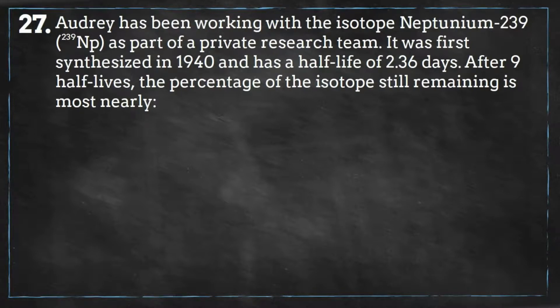Audrey has been working with the isotope Neptunium-239 as part of a private research team. It was first synthesized in 1940 and has a half-life of 2.36 days. After 9 half-lives, the percentage of the isotope still remaining is most nearly...